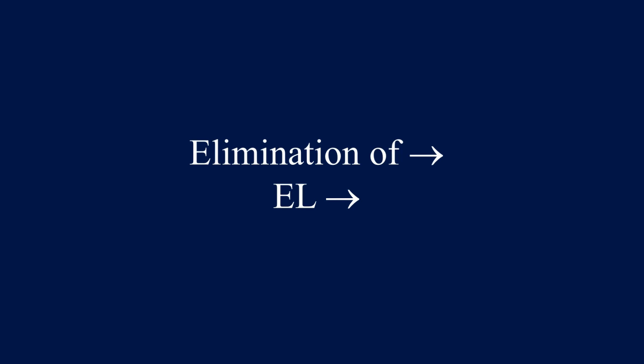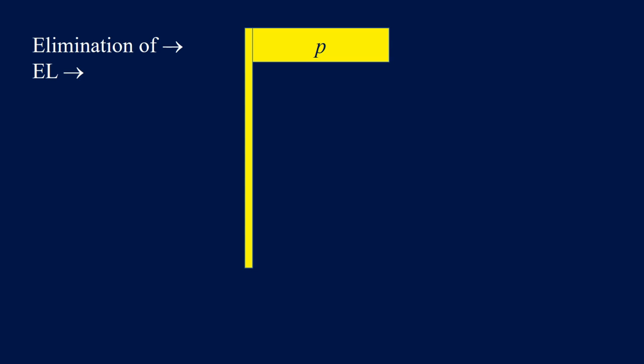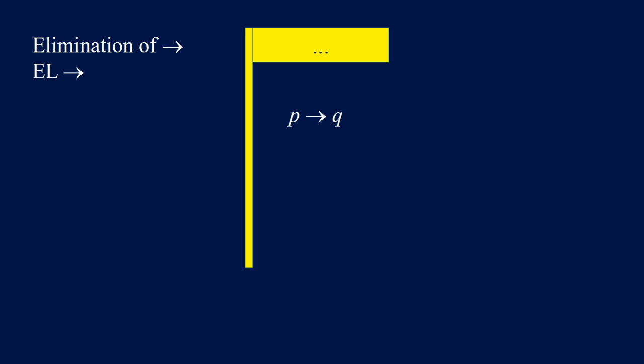Elimination of implication — we're going to use L implication for reasoning. If we have P in the flag or under the flag, and we have P implies Q under the flag, then we can conclude Q. Also, if we have P implies Q in the flag or under the flag, and we have P under the flag, then we can conclude Q. The order of P implies Q and P is not important. This is the rule of modus ponens.